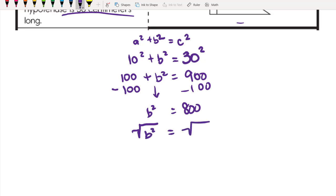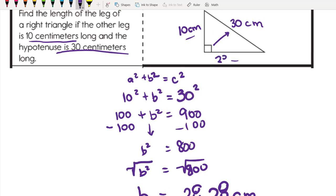My last step is to square root both sides. We must do the same operation to both sides to keep it balanced. Square root of b squared and square root of 800. These operations undo each other, so I'm left with b equals approximately 28.28 centimeters. Going back to my picture, this is a leg and it should be shorter than my hypotenuse, and it is, so that seems to fit.